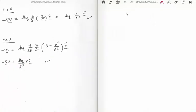The next thing I'd like to do is just confirm that E in actual fact is minus the gradient of the scalar potential.